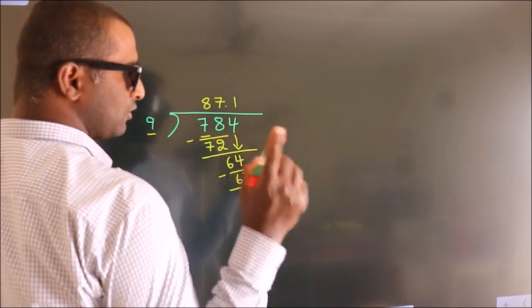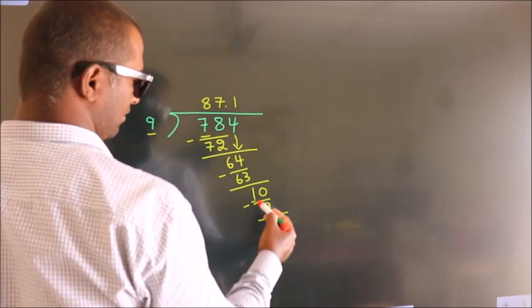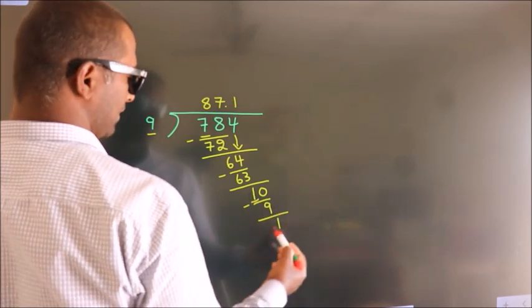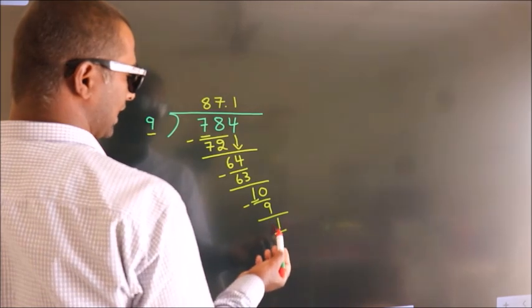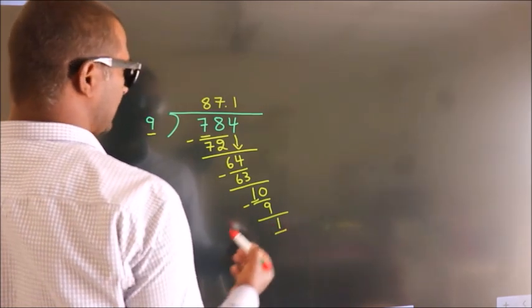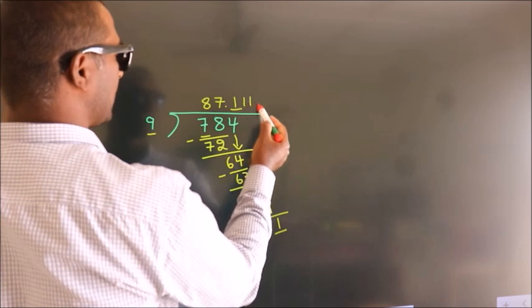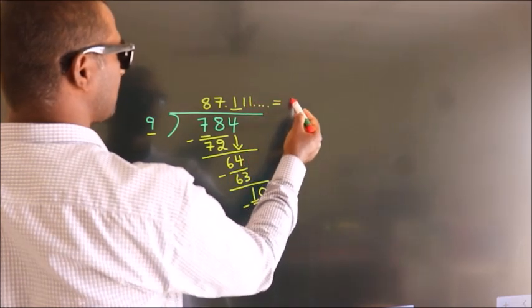Now, you observe, we had 1 here. And, we got 1 again. That means, this number keep on repeating. So this is our quotient.